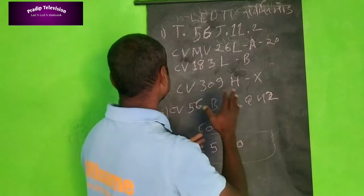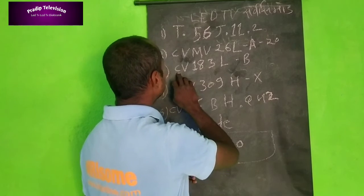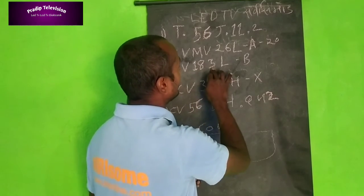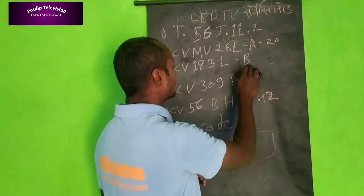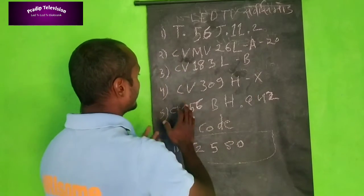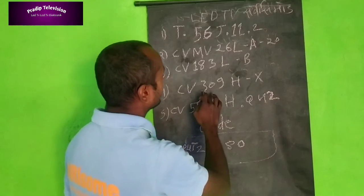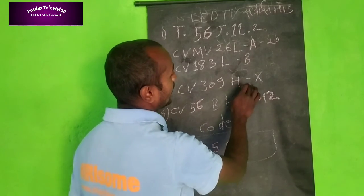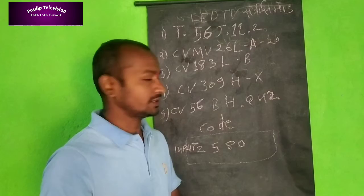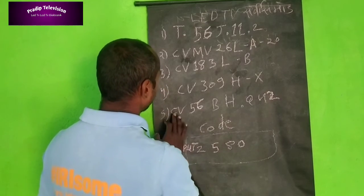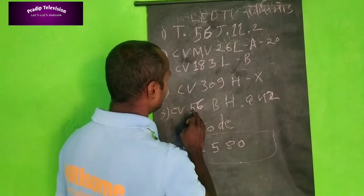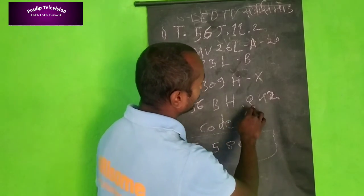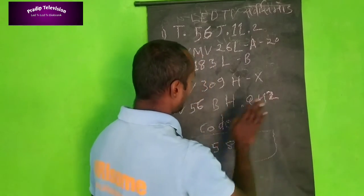Next, we will talk about Cv183l-b. Number 4 is Cv309hx.x. Number 5 is Cv56bhq24.